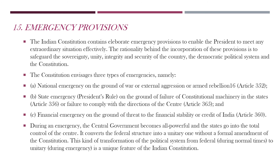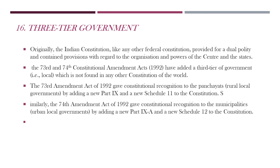The last feature is the three-tier government. India has a federal form of government with two administrative systems at the central and state levels. To improve administration at the local level, two amendments were made: the 73rd Amendment in 1992 introduced the Panchayat system for rural local government, and the 74th Amendment introduced the Municipal system for urban local government.